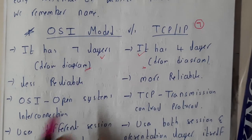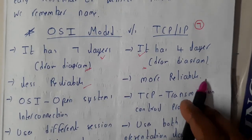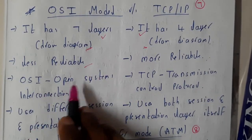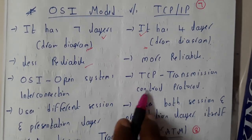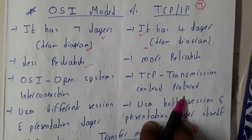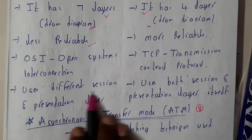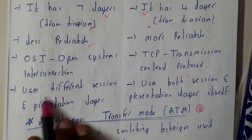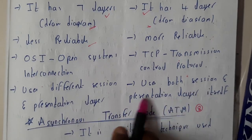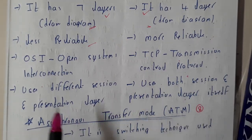OSI model is less reliable whereas TCP/IP model is highly reliable. The OSI model full form is Open System Interconnection, and TCP/IP stands for Transmission Control Protocol and Internet Protocol. In TCP/IP, both the session and presentation layers are merged into the application layer itself.